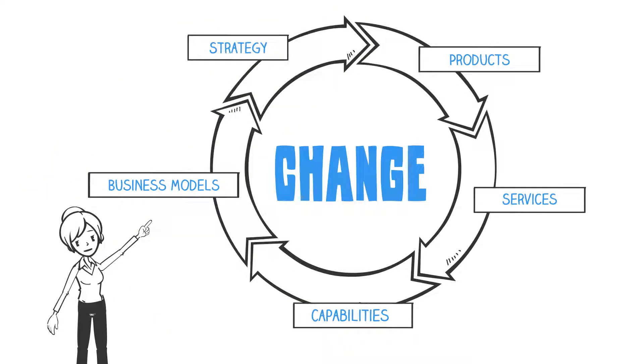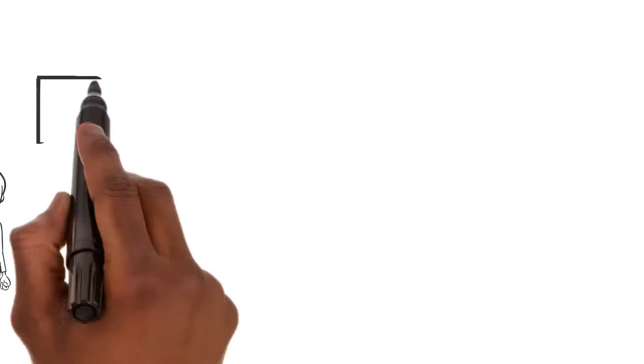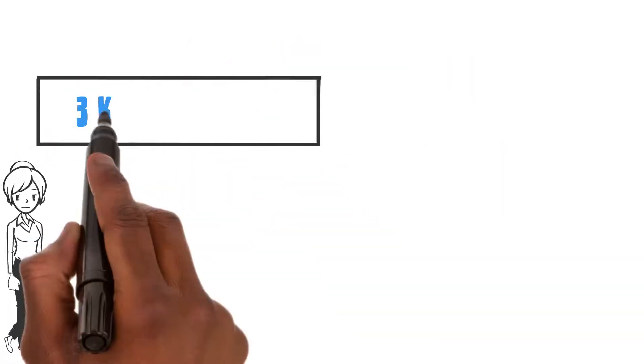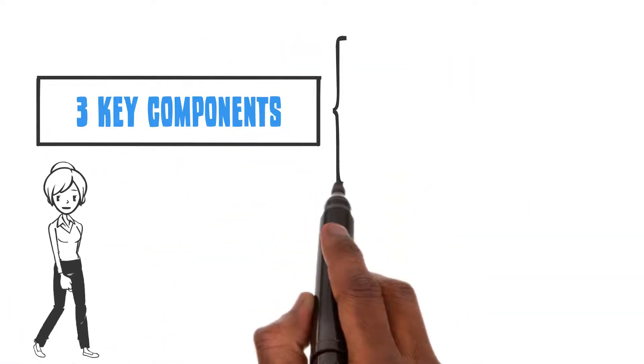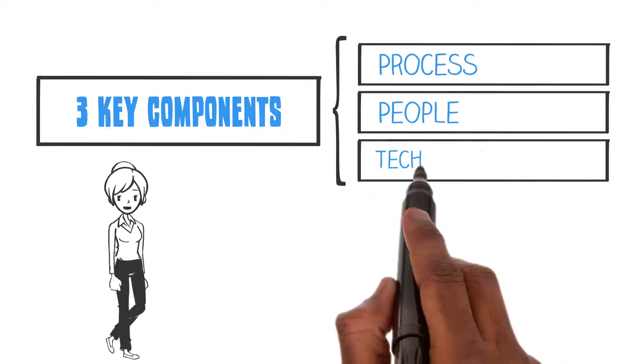Thankfully, this change can be approached systematically. To successfully manage innovations and change your company, you have to align and manage three components – process, people and technology.